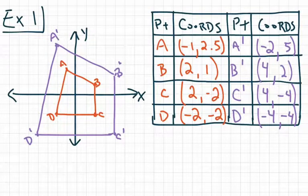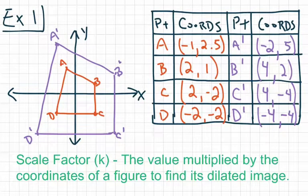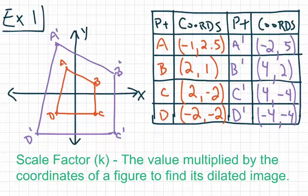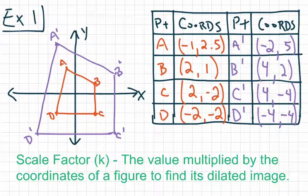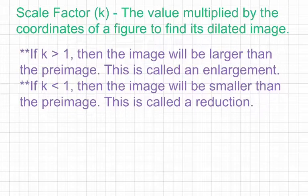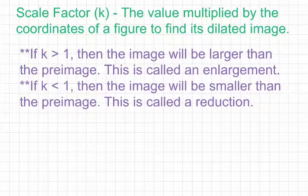That introduces us to the concept of scale factor. Our next term is scale factor, represented by a lowercase k — just like we use m for slope and b for y-intercept, we use k for scale factor. Scale factor is the value multiplied by the coordinates of a figure to find its dilated image. The scale factor can either make the image bigger or smaller than the original. If the scale factor k is greater than 1, the image will be larger than the pre-image. This is called an enlargement.